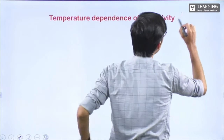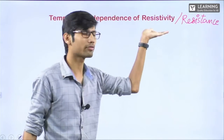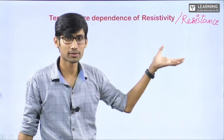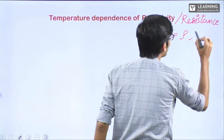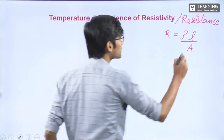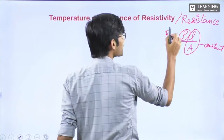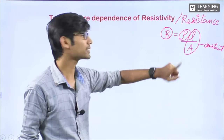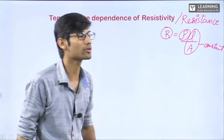Before that, see — if I write 'resistance' here, it is still correct. Temperature dependence of resistivity or resistance — we can write anything. Why? It doesn't mean that resistivity and resistance are the same thing; they are not. But their behavior, their nature is the same as temperature changes. Because resistance is equal to ρL/A. If we are talking about one particular conductor, for that conductor length and area are the same. So if ρ changes, resistance changes by the same amount.